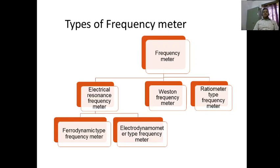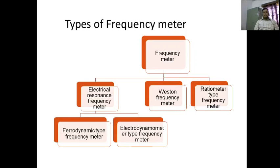The three types are: electrical resonance frequency meter, Weston frequency meter, and ratio type frequency meter. The electrical resonance frequency meter is again classified into ferrodynamic type frequency meter and electrodynamometer type frequency meter.